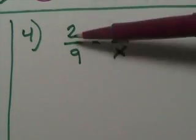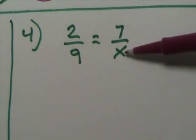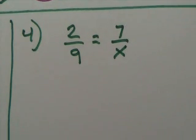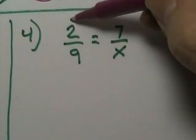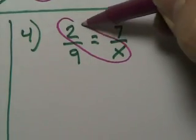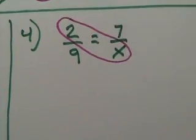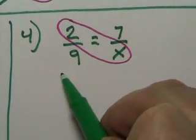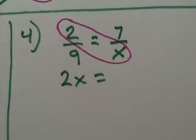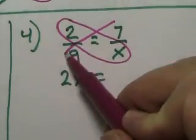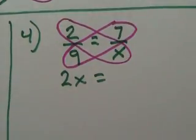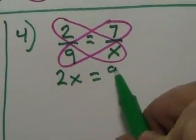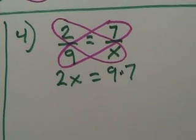This is almost the same numbers. 2 over 9 equals 7 over x. So let's see, I'm going to do my cross products. So you always start off with a 1 with the x. 2 times x. It's 2x. Then I have 7 times 9, or 9 times 7. It doesn't matter the order, because of commutative property.